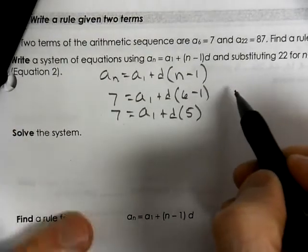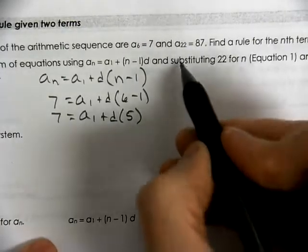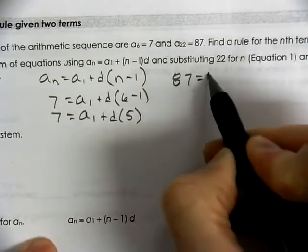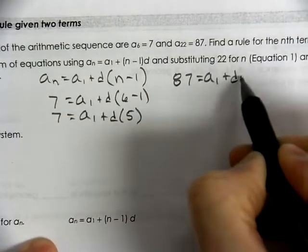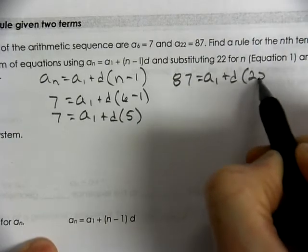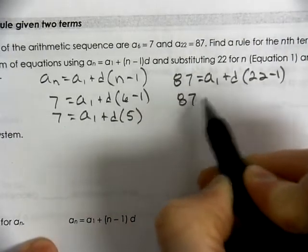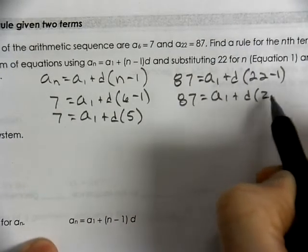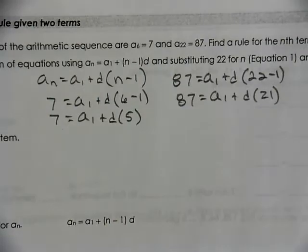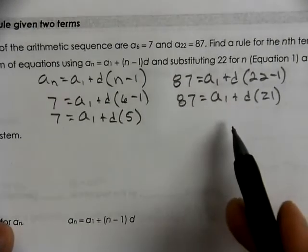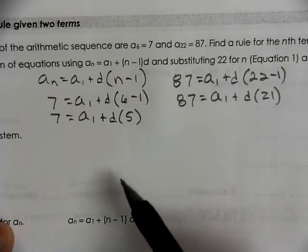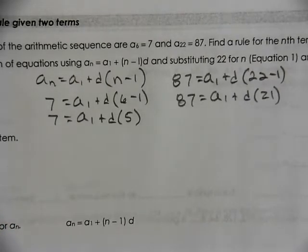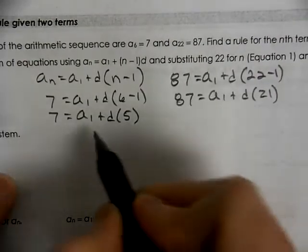So next we're going to come over to the second point that they give us. And we'll say that 87 equals a of 1 plus d, 22 minus 1. 87 equals a of 1 plus d 21. Now we have our two equations. Very much like if it was y equals 3x plus 2. And we had to take two equations and subtract. We're going to work the system.